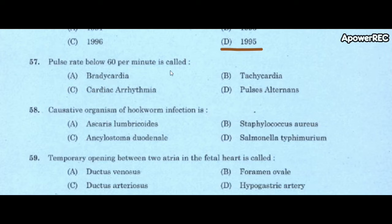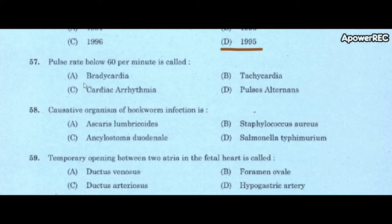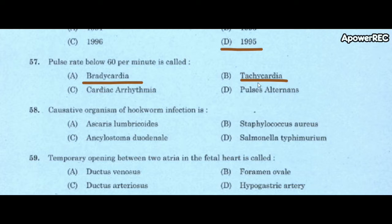Next question: pulse rate below 60 per minute is called A) bradycardia, B) tachycardia, C) cardiac arrhythmia, D) pulsus alternans. Correct answer is bradycardia. Pulse rate below 60 per minute is called bradycardia. Pulse rate above 100 per minute is called tachycardia.